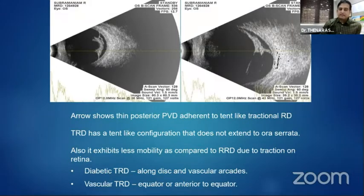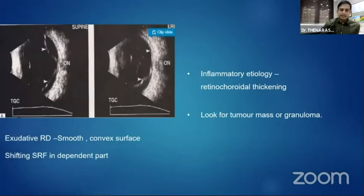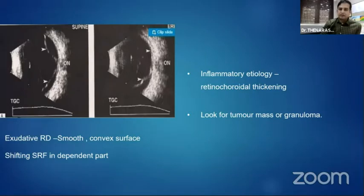In vascular TRDs, it will be restricted to the equator or beyond. In exudative RD, there is a classic shifting fluid — the first picture is taken in the lying position and the second in the sitting position, and the convexity and the fluid increases. We also have to look for RCS thickness and any underlying masses due to inflammatory conditions or mass lesions causing exudative RD.